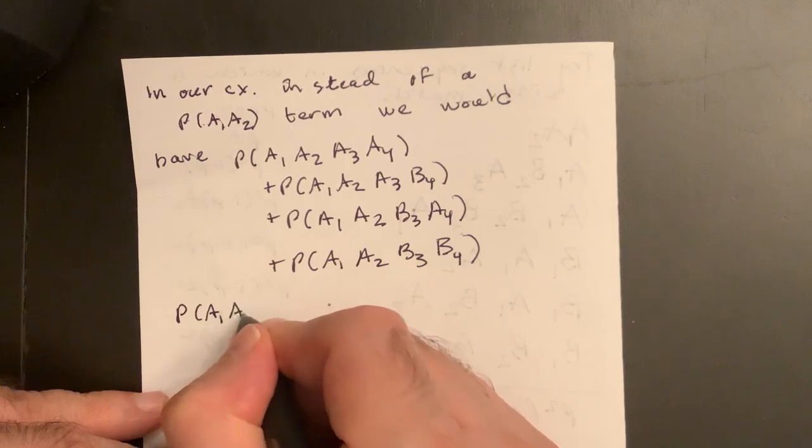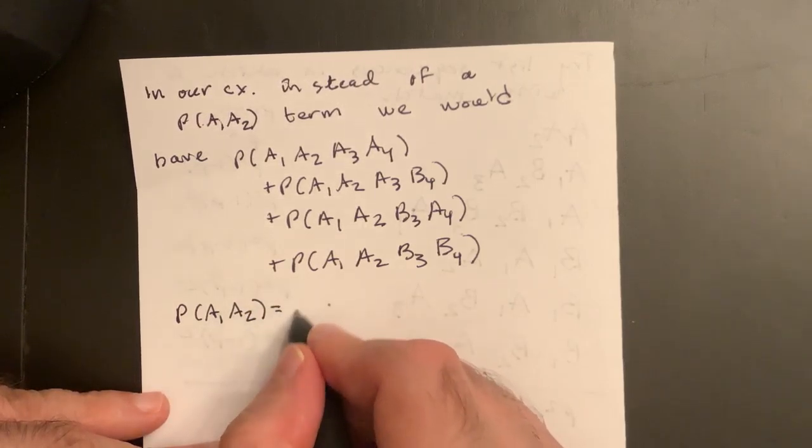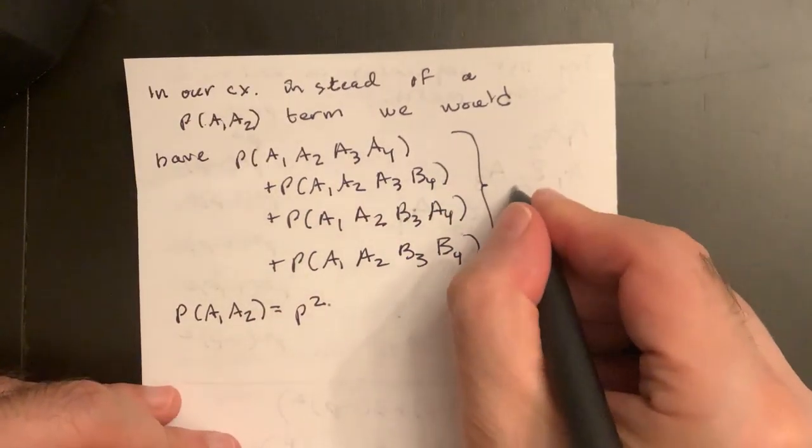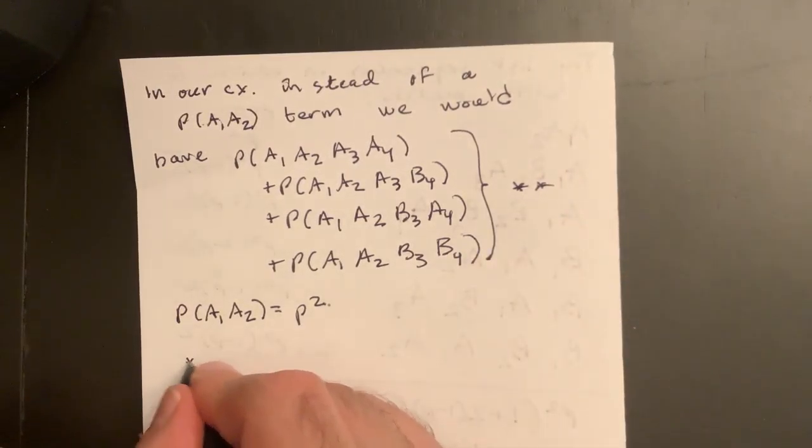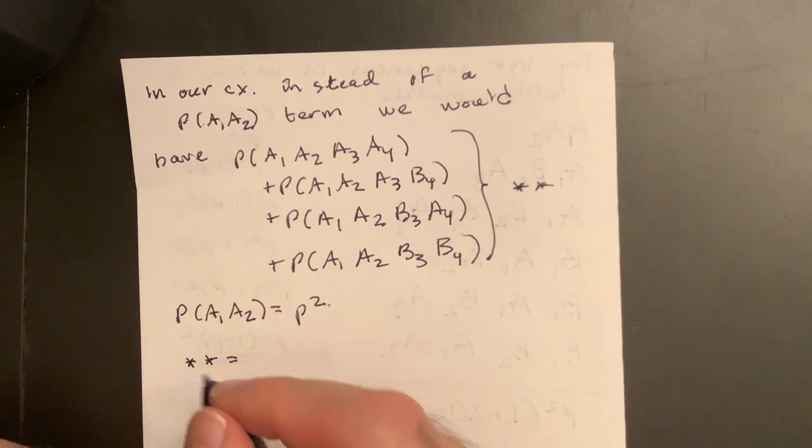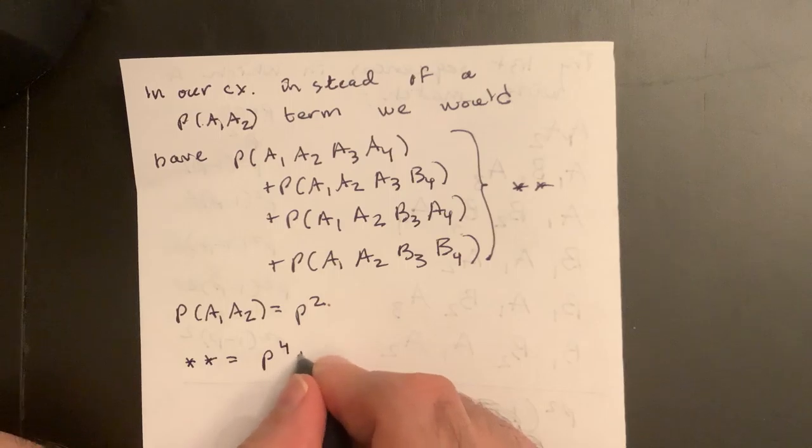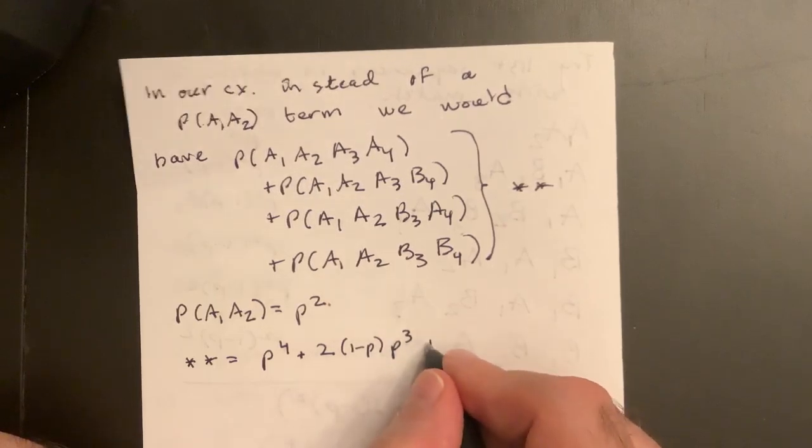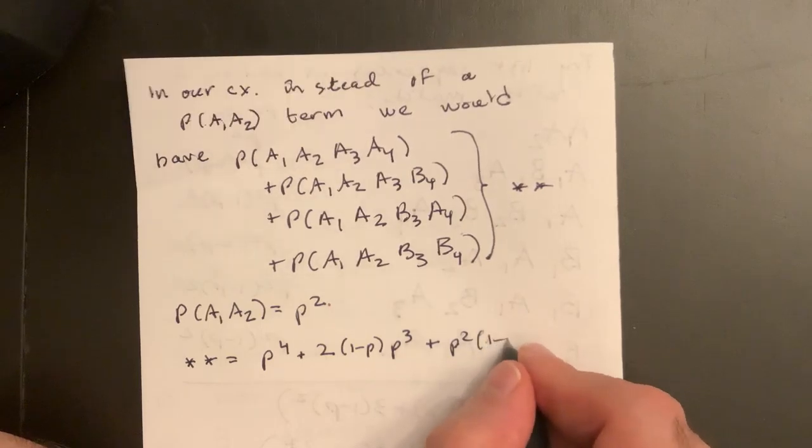Well, P A1 A2 is equal to P squared, right? And now this one, this sum, let's call it star star or something. Star star is equal to P to the fourth plus two times one minus P times P cubed, plus P squared times one minus P squared.